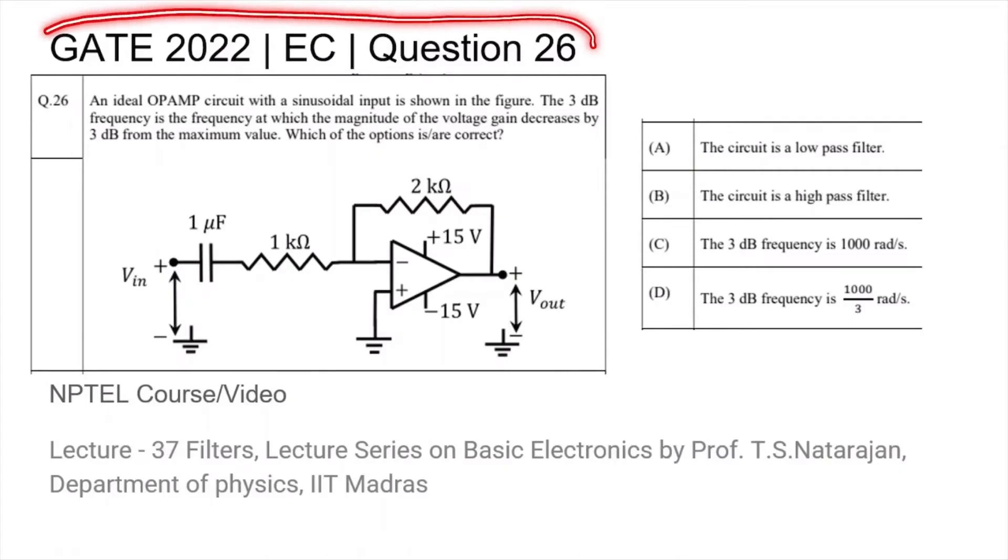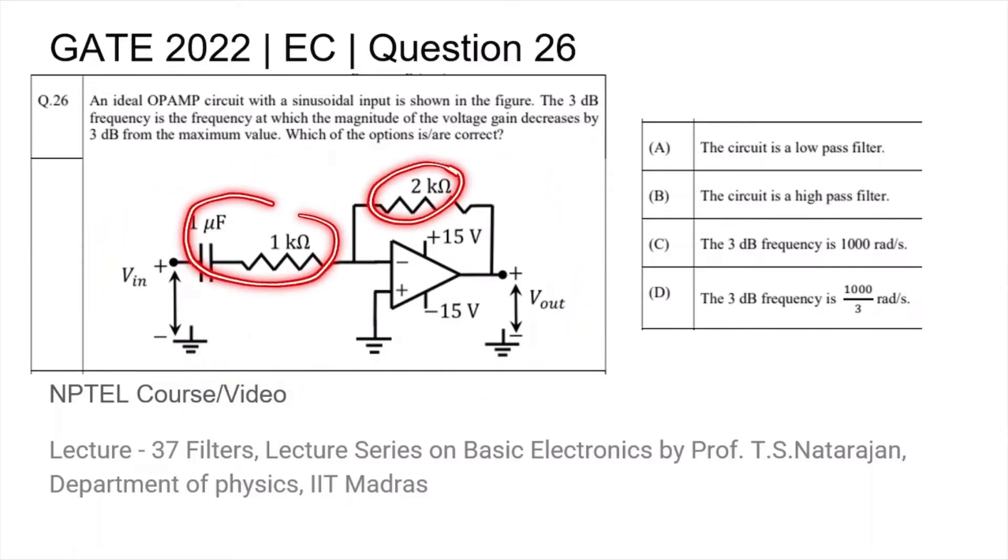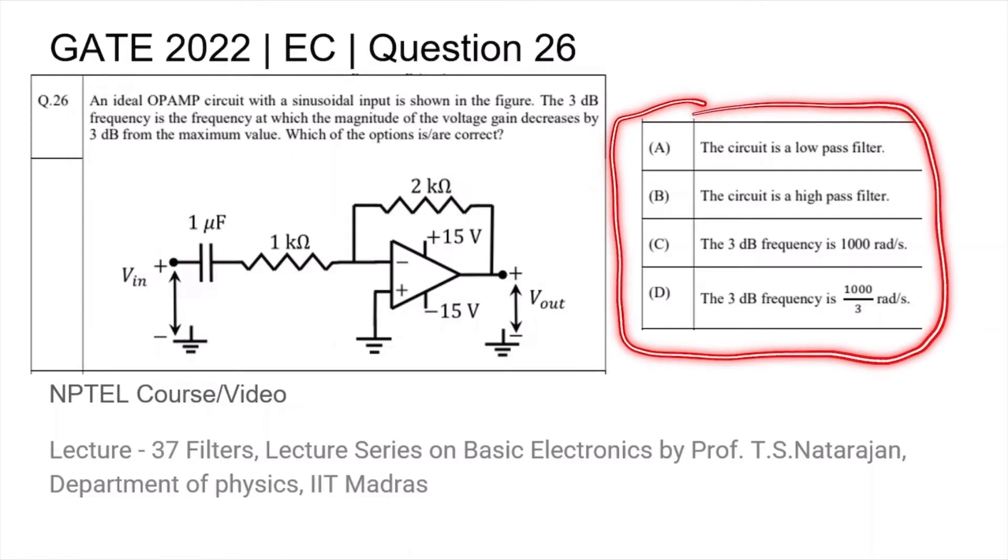This is question 26 from the GATE 2022 EC paper, where we are given an ideal op-amp connected in an inverting amplifier configuration with an input impedance and a feedback resistance. We are asked to find out which of the following four statements are correct for this circuit.